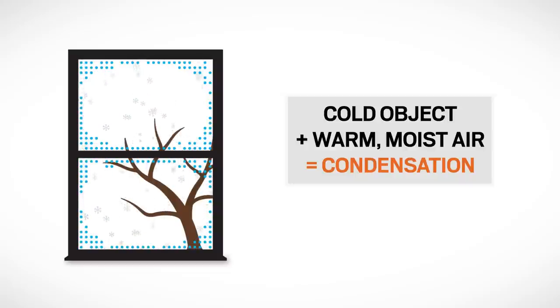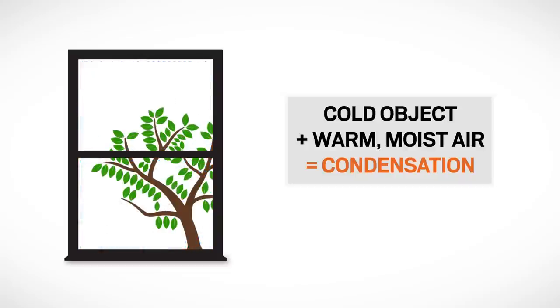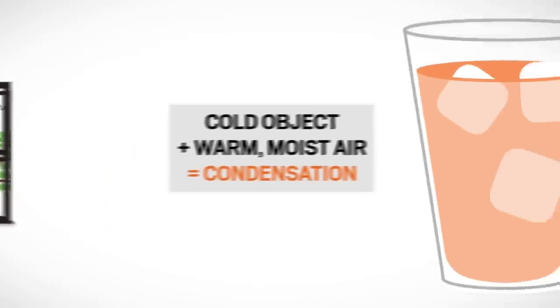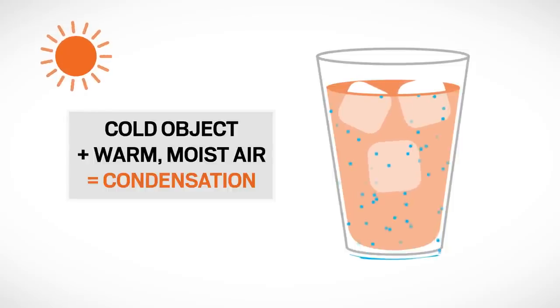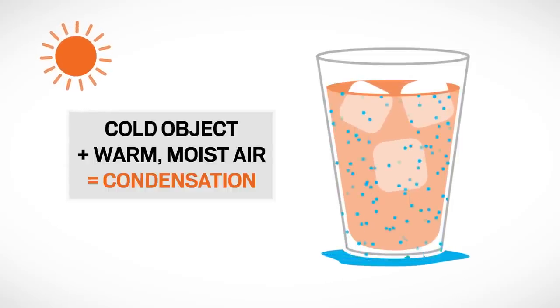Although condensation is most common during the winter, it can occur whenever water vapor in warm air contacts a colder surface. That's why your iced tea glass sweats during the summer. The glass is cold and condensation forms when warmer, moist air comes into contact with it.